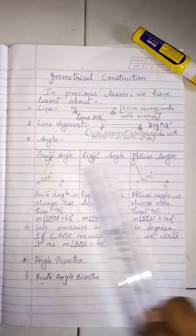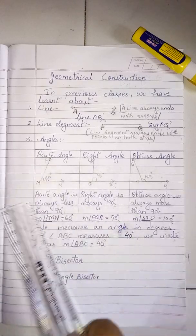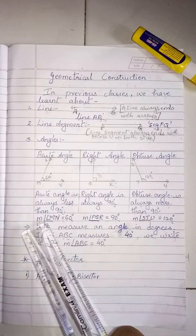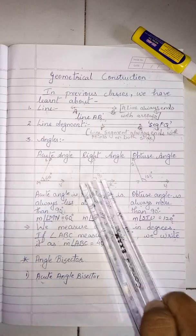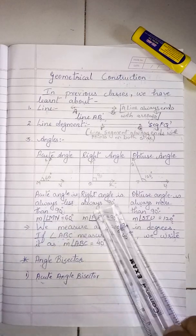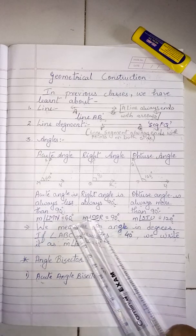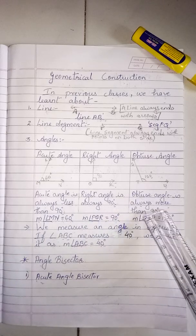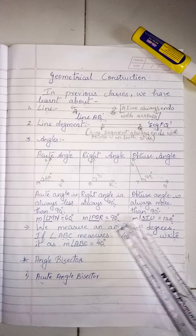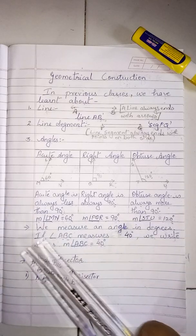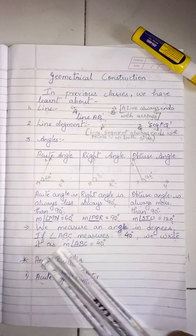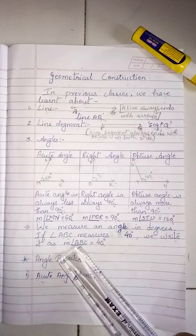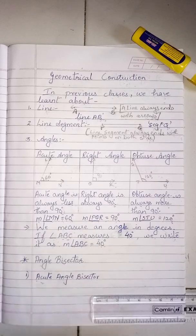Angles — there are three types of angle: acute angle, right angle, and obtuse angle. Acute angle is always less than 90 degrees, and we write it as measure angle LMN is equal to 60 degrees. A right angle is always 90 degrees, written as measure angle PQR is equal to 90 degrees. Obtuse angle is always more than 90 degrees, written as measure angle STU is equal to 120 degrees. We measure an angle in degrees; if angle ABC measures 40 degrees, we write it as measure angle ABC is equal to 40 degrees.